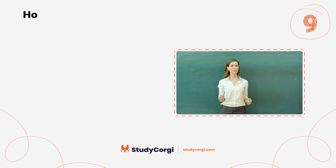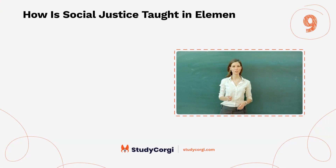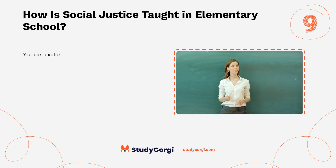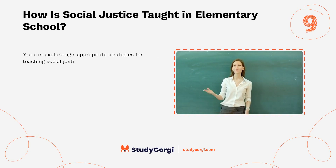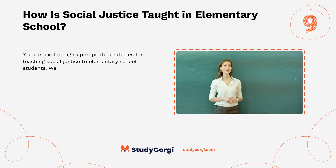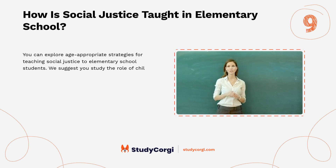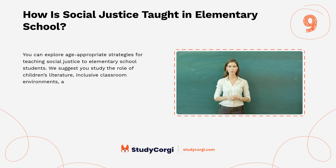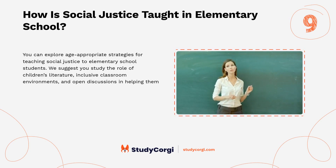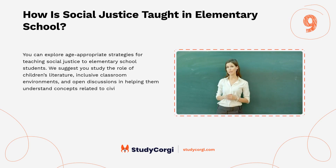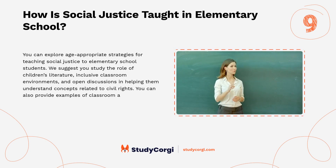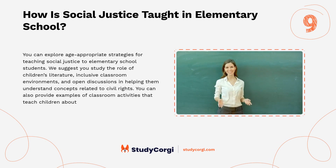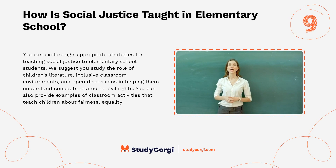How is social justice taught in elementary school? You can explore age-appropriate strategies for teaching social justice to elementary school students. We suggest you study the role of children's literature, inclusive classroom environments, and open discussions in helping students understand concepts related to civil rights. You can also provide examples of classroom activities that teach children about fairness, equality, and social responsibility.